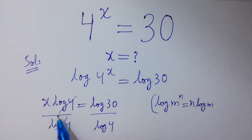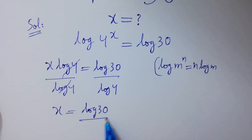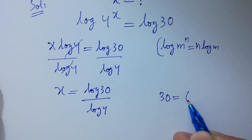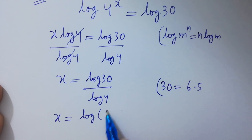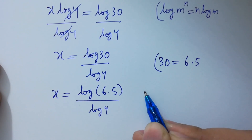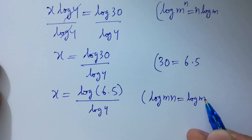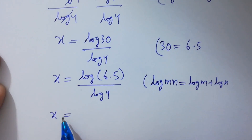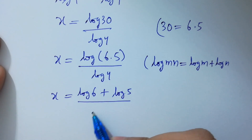Log 4 and log 4 will be cancelled, giving x equals log 30 over log 4. Since 30 equals 6 times 5, x equals log(6 times 5) over log 4. Since log(mn) equals log m plus log n, x equals (log 6 plus log 5) over log 4.